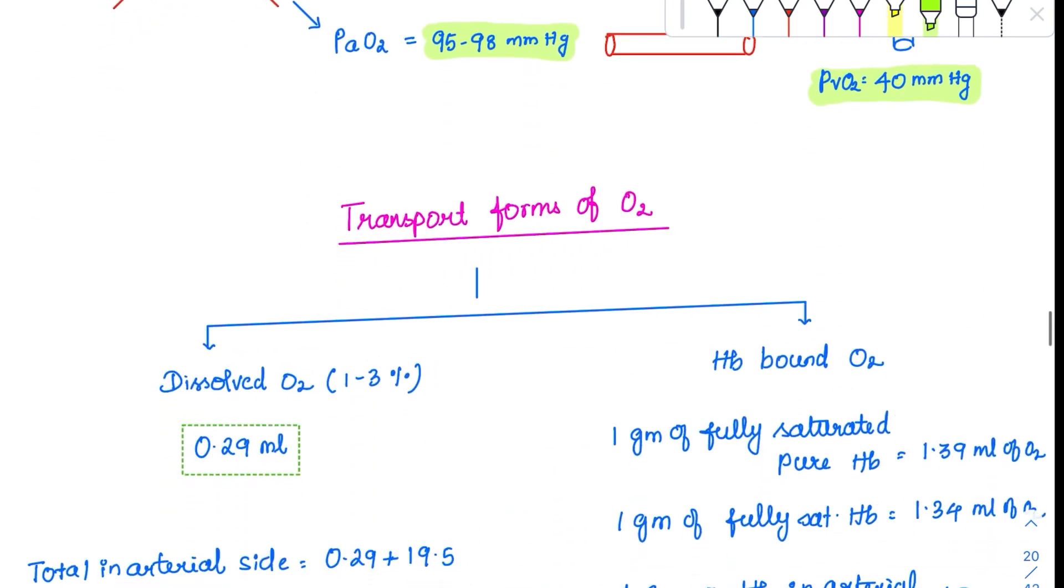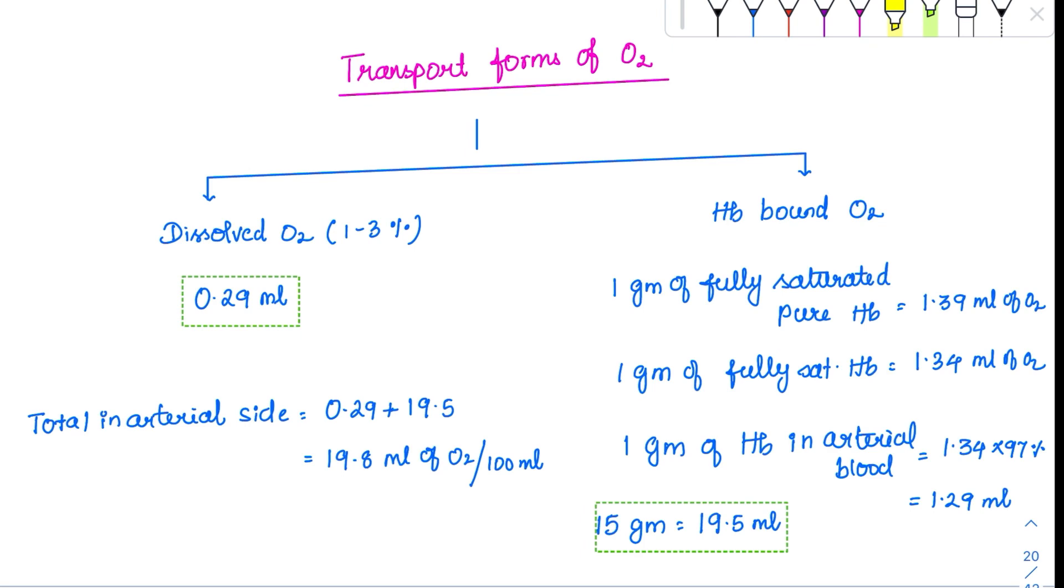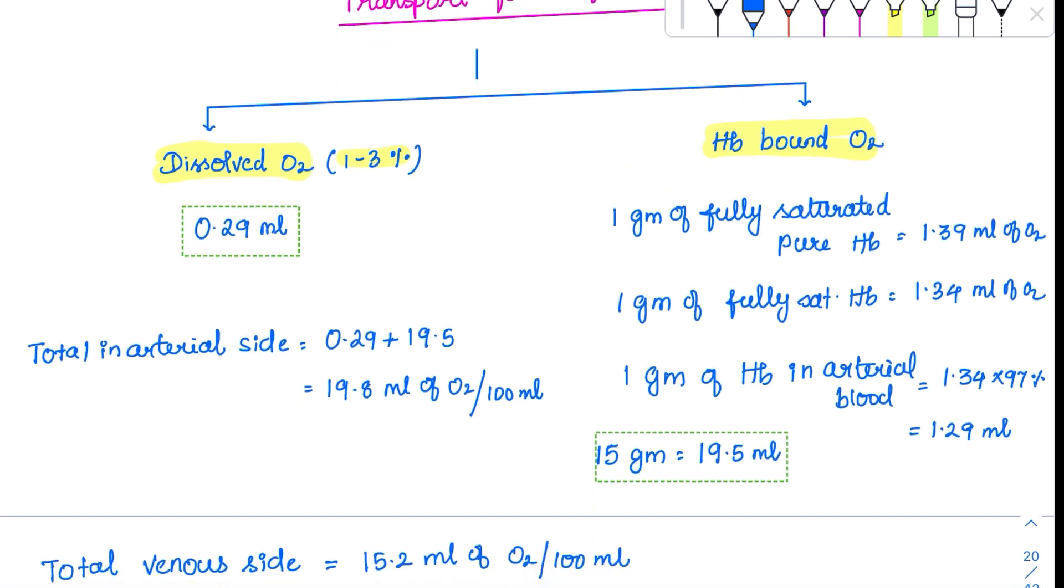Now coming to the transport forms of oxygen. Oxygen is primarily transported in two forms. One is the dissolved form. Another one is the hemoglobin bound oxygen. The dissolved form is very less, which is around 1 to 3%. The hemoglobin bound form is carrying maximum amount of oxygen, that is 97%. The dissolved form carries just 0.29 ml. But the important thing about this dissolved form is it is the one which is contributing to the partial pressure. Whenever it is bound to the hemoglobin, it will not cause any partial pressure.